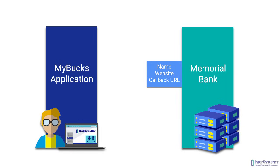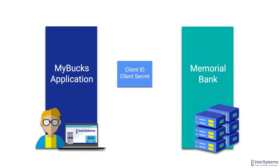Once MyBucks provides that necessary information to the Memorial Bank API, the API will send back a set of credentials to MyBucks. These credentials include a client ID, which is a public and unique identifier that will be used to identify MyBucks as an application, and a client secret, which is a private identifier kept secret between the app and the API, used to authenticate MyBucks when it makes a request for an access token.